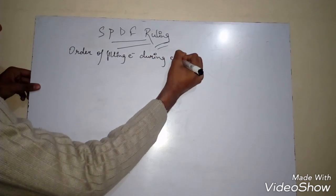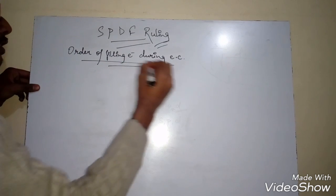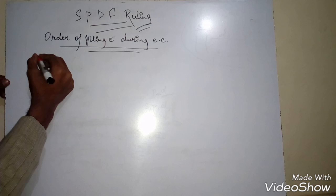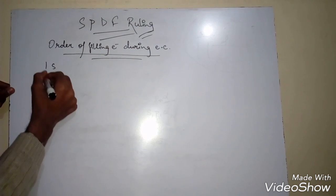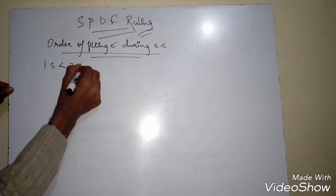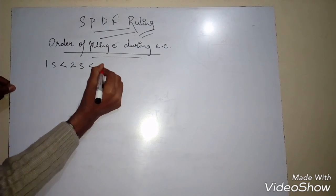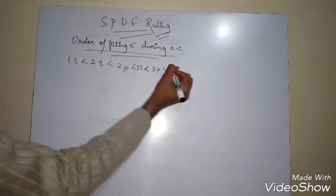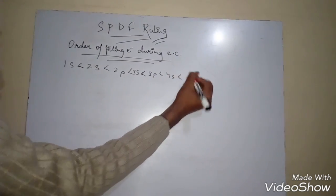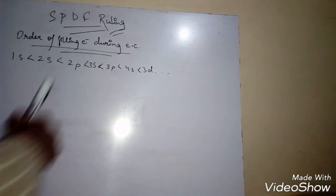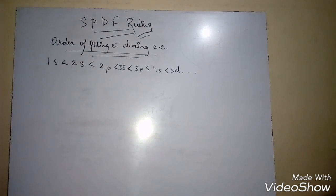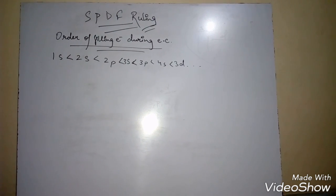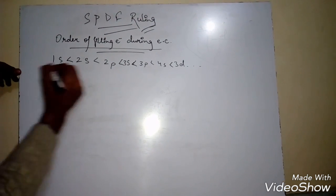Here I will write the electronic configuration in short form. The order in which we fill electrons is: 1S, then 2S, then 2P, then 3S, then 3P, then 4S, then 3D, and so on. This is the pattern in which we place electrons, and I will tell you an example of how to remember this pattern.